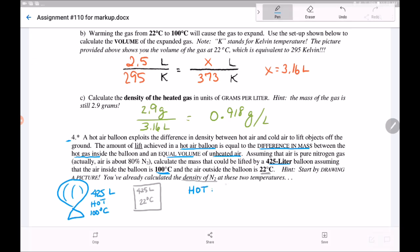We have 425 liters. I'm using dimensional analysis because I have the density right here. I already calculated 0.918 grams per liter. How many total grams is that? 390 grams.